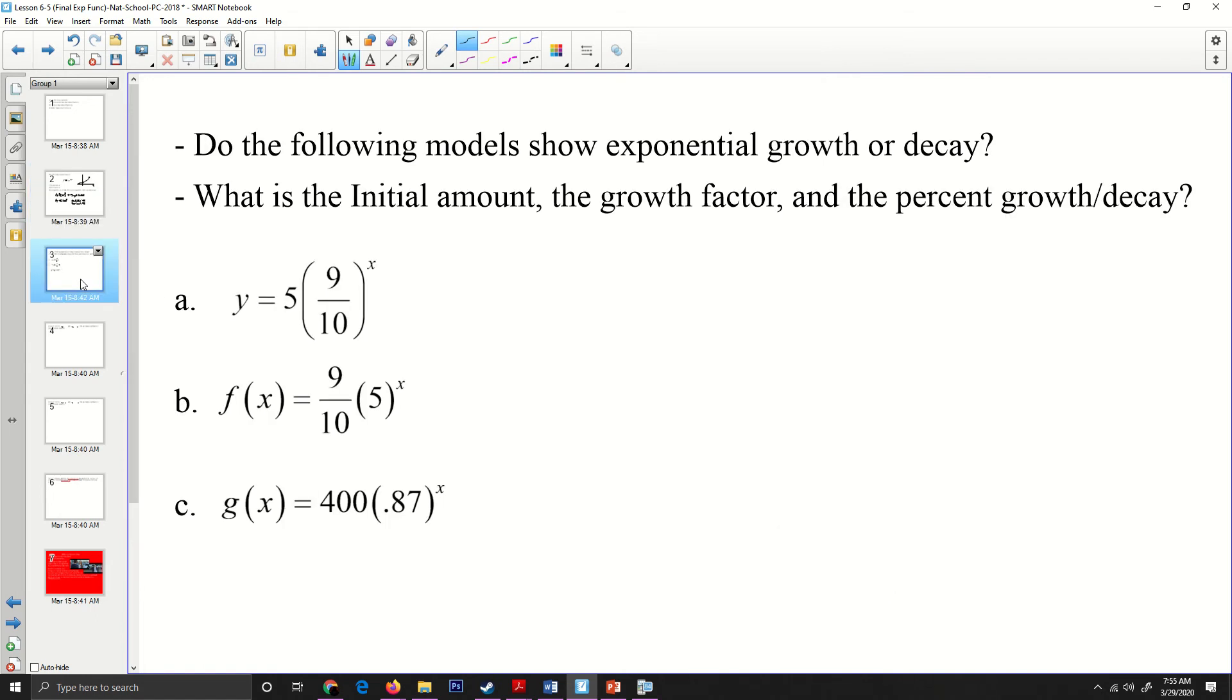All right, let's do some examples. The following models show exponential growth or decay. What's the initial amount, the growth factor, the percent growth and percent decay. So when I look at this thing here, I try to make them all similar. When I look at this thing, the initial amount for this one, I'll call it IA, that's going to be the five. That's going to be this value right here. The growth factor, that's going to be the nine over 10. Now, because the nine over 10 is smaller than one,